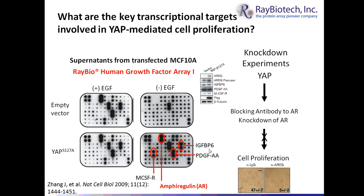The upregulated biomarkers include IGF binding protein 6, PDGF-AA, macrophage colony stimulating factor receptor, and amphoregulin. Daniel's group studied each of these targets at the mRNA level by quantitative RT-PCR, and it was only amphoregulin that was shown to truly be induced at the transcriptional level. They then performed knockdown experiments using a blocking antibody to amphoregulin to eliminate the function of YAP, and cell proliferation and transformation was vastly reduced.